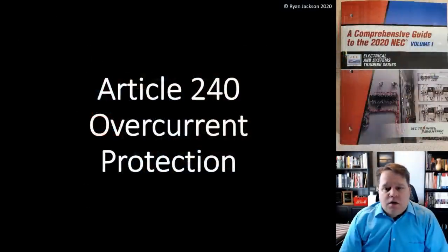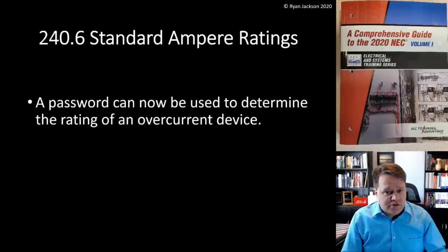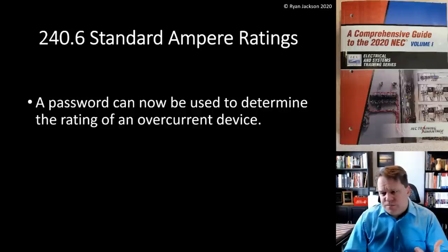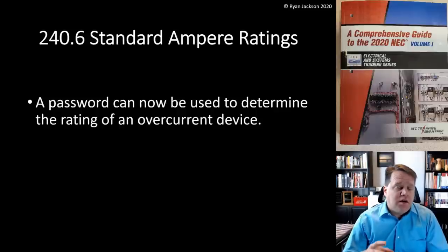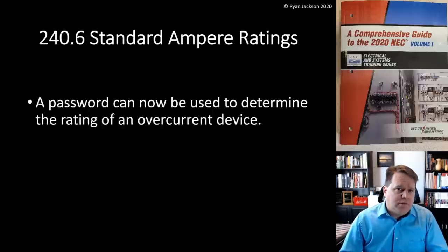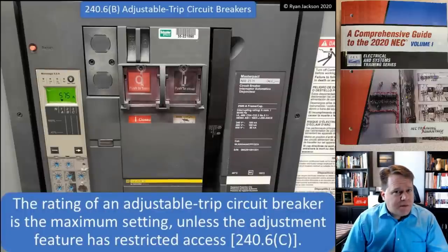There were a few changes in Article 240, starting with 240.6, which covers the standard ampere ratings of circuit breakers and fuses. A password can now be used to determine the rating of an overcurrent device. Section 240.6A gives us a list of standard ratings that we use in conjunction with 240.4B, the next-size-up allowance. Section 240.6B addresses adjustable trip circuit breakers.